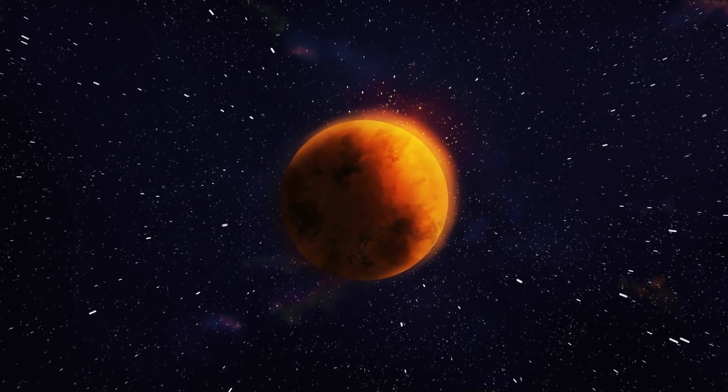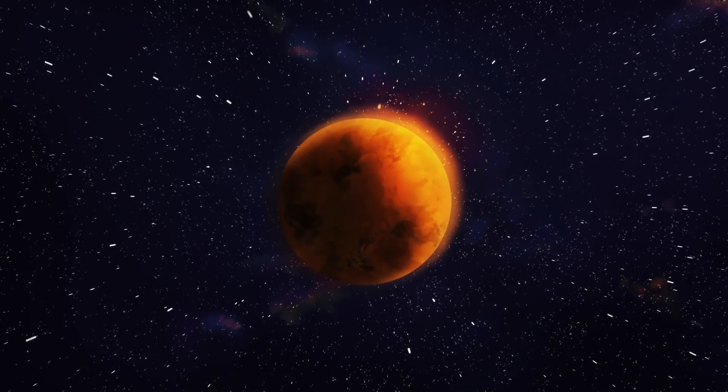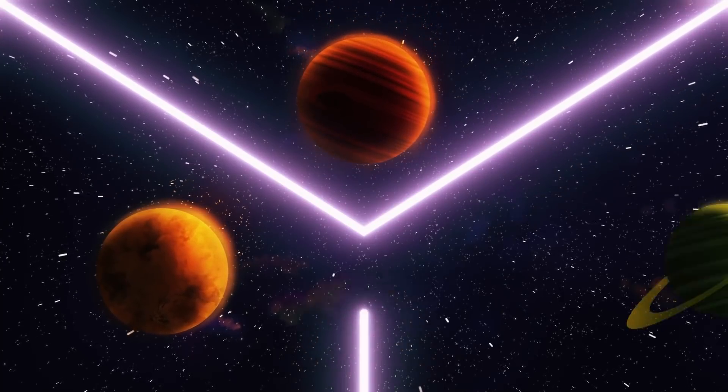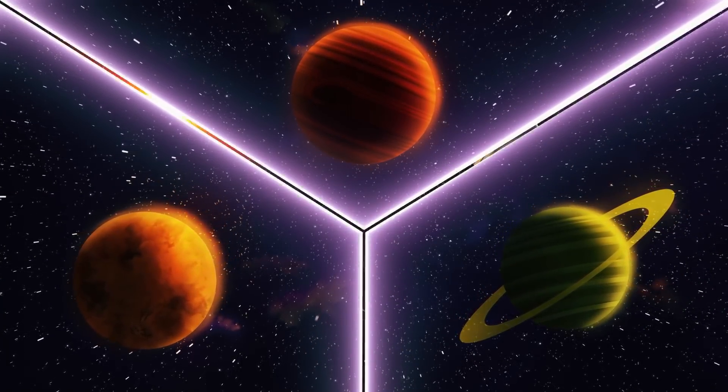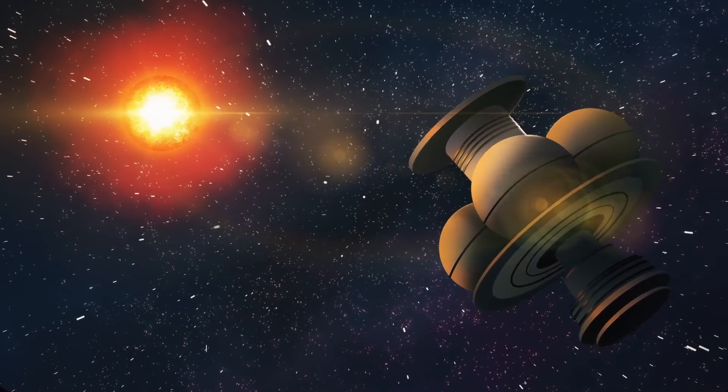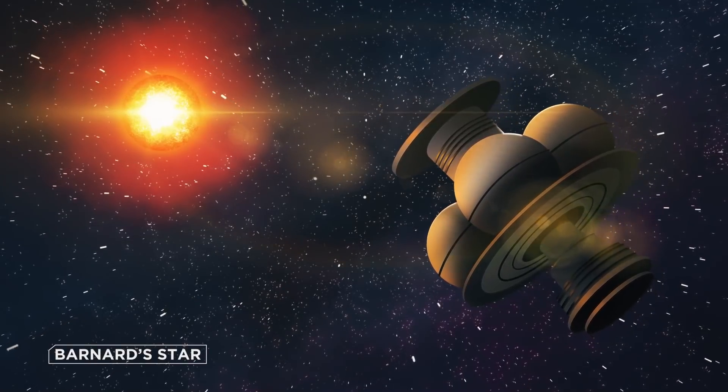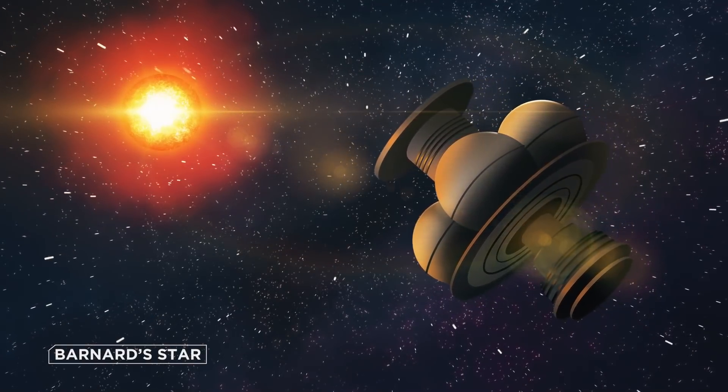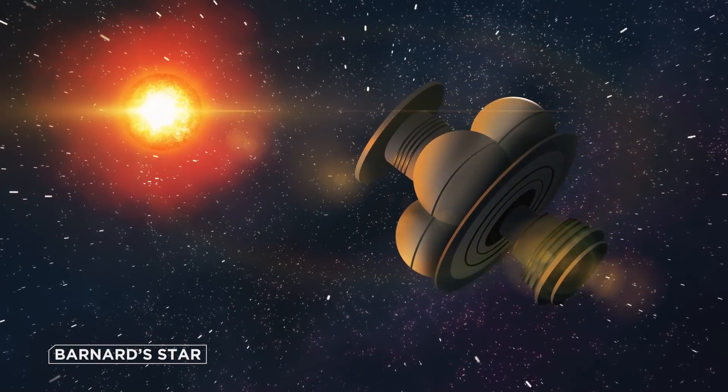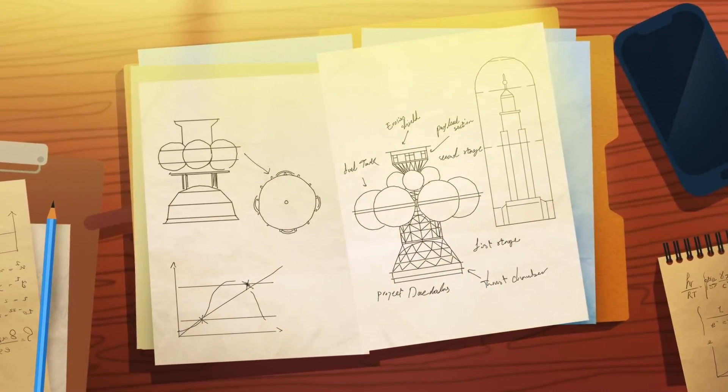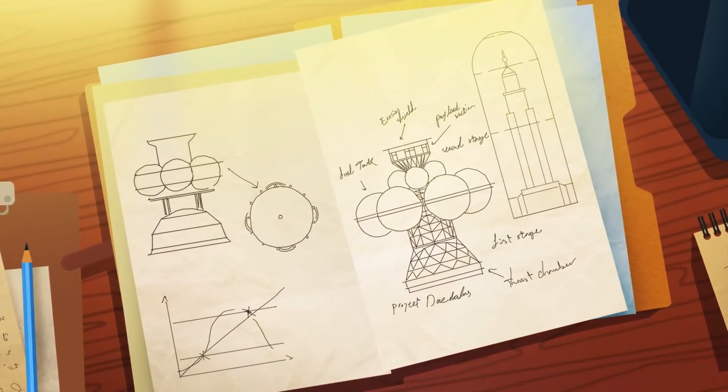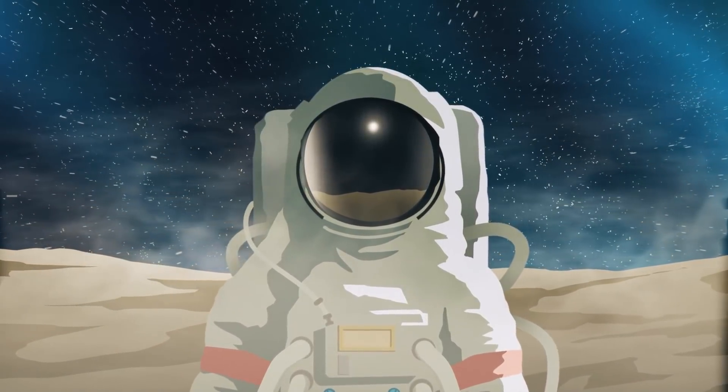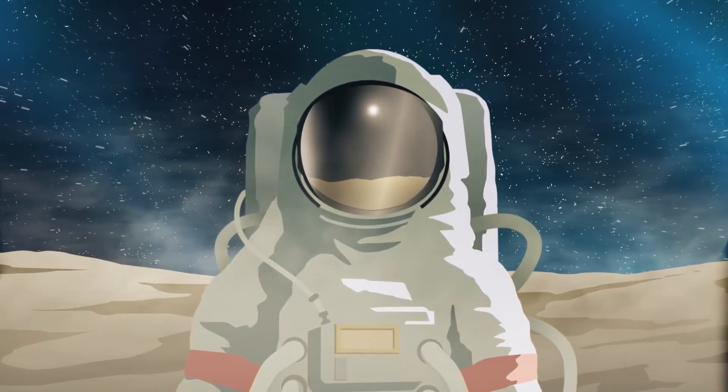At breakneck speeds, Project Daedalus would shoot past Mars, Jupiter and Saturn, break free from the sun's magnetic field, and perform a one-shot flyby of Barnard's star, about six light years or 35 trillion miles from Earth. Project Daedalus ended in 1978 without a working prototype. But the project was a crucial experiment which proved interstellar travel was not only possible, but on the horizon.